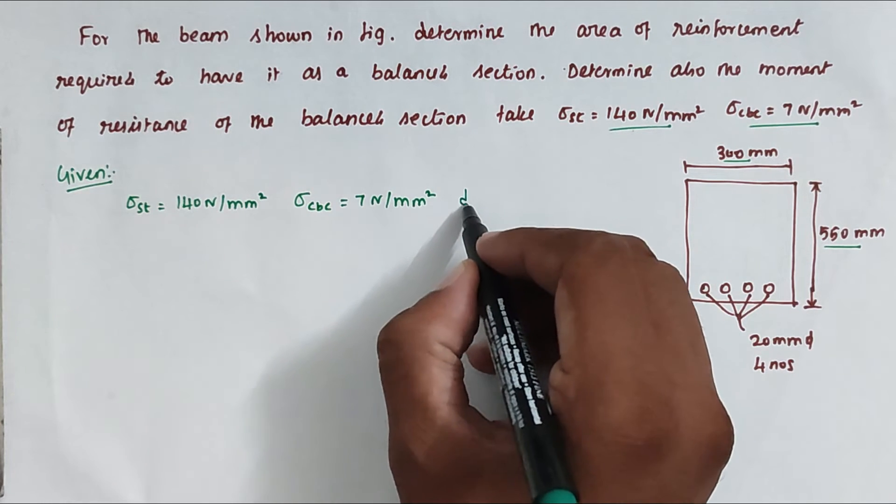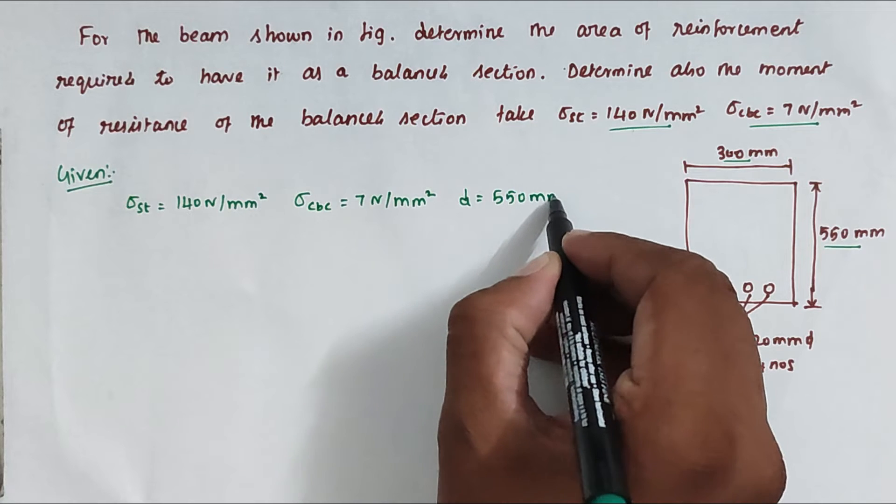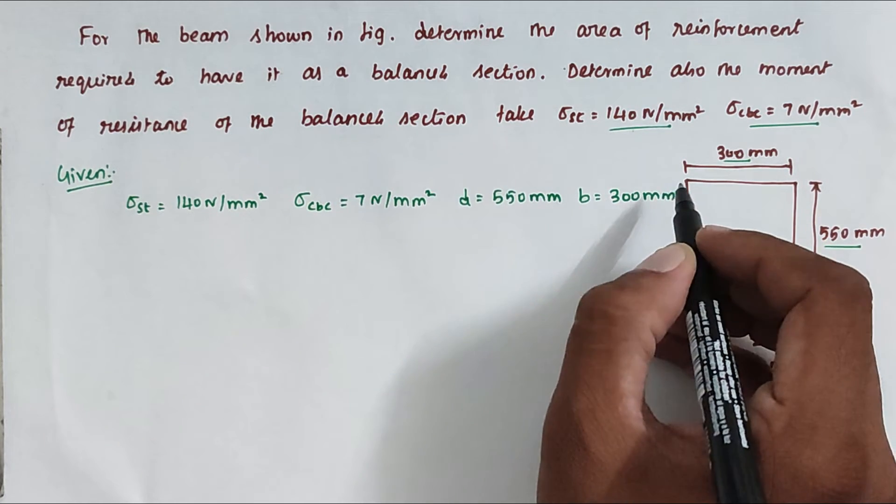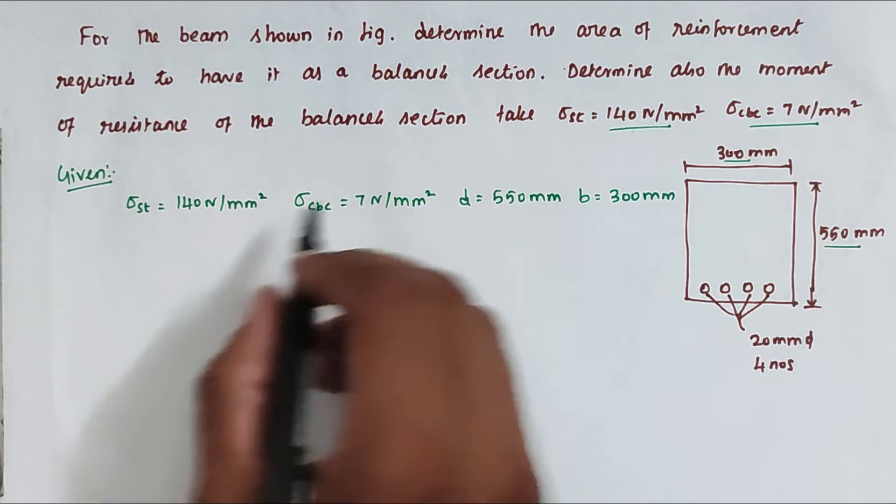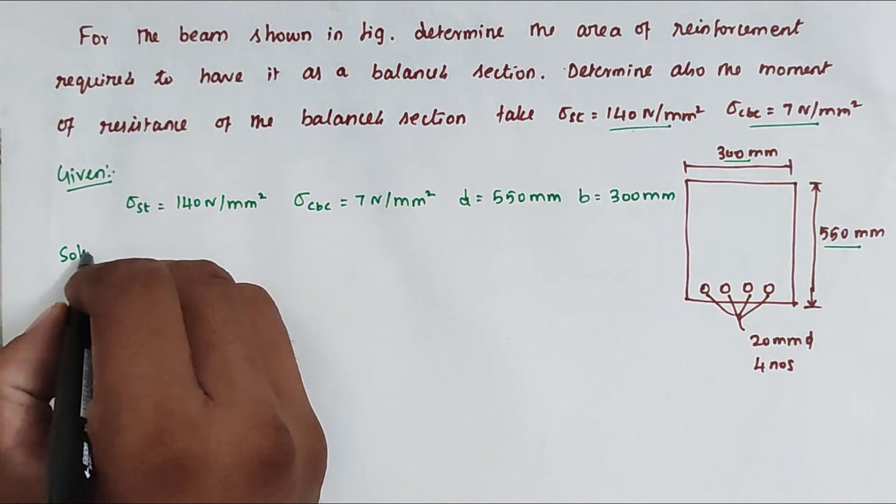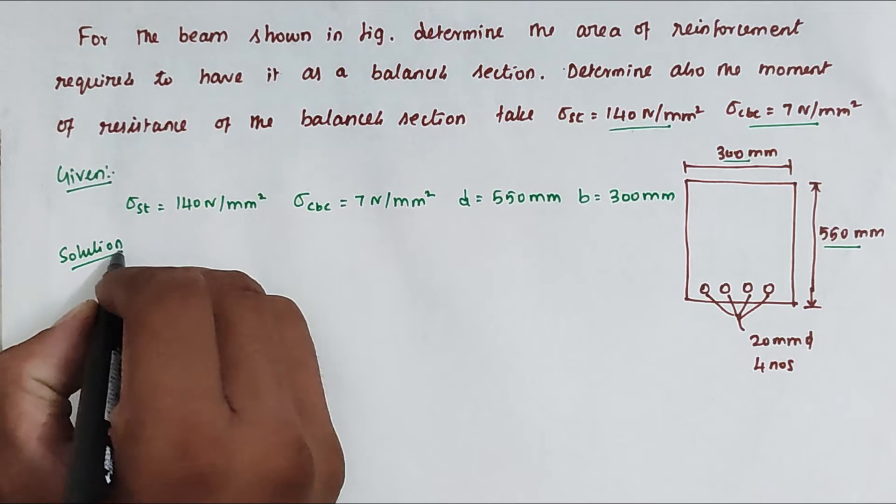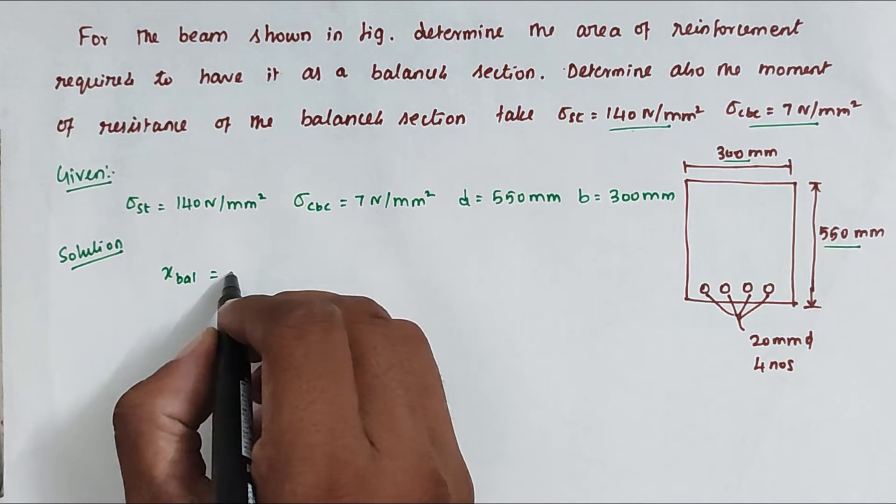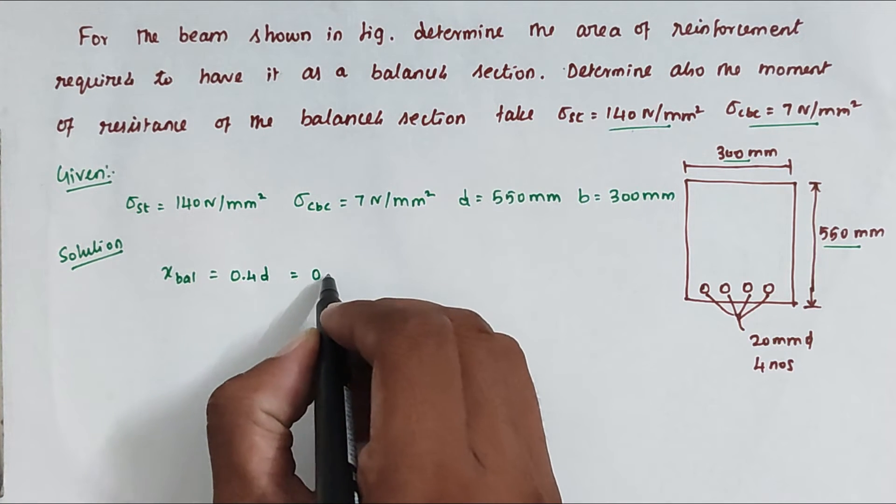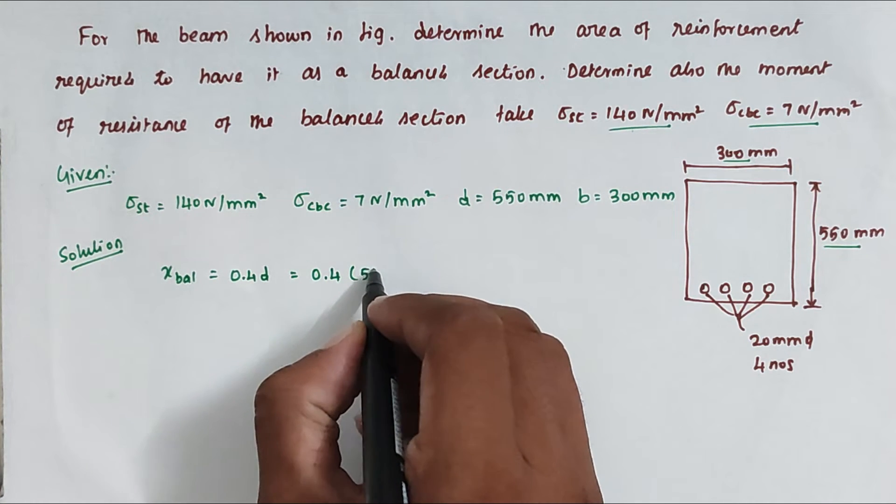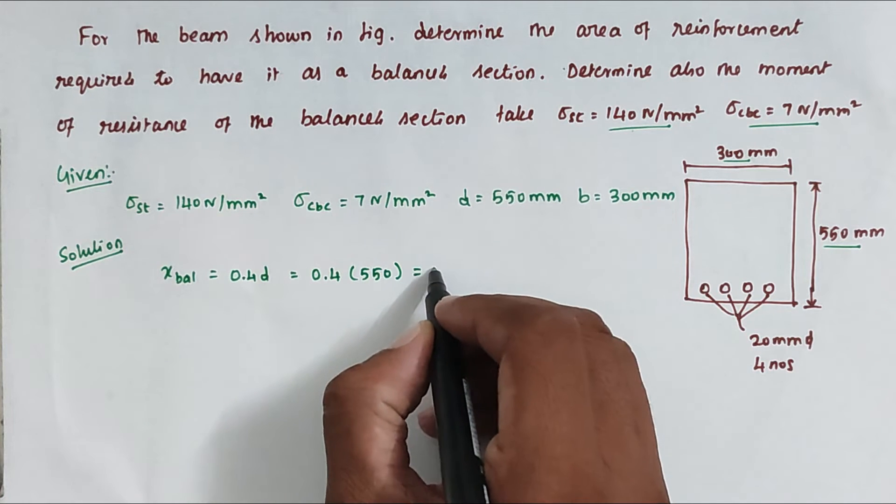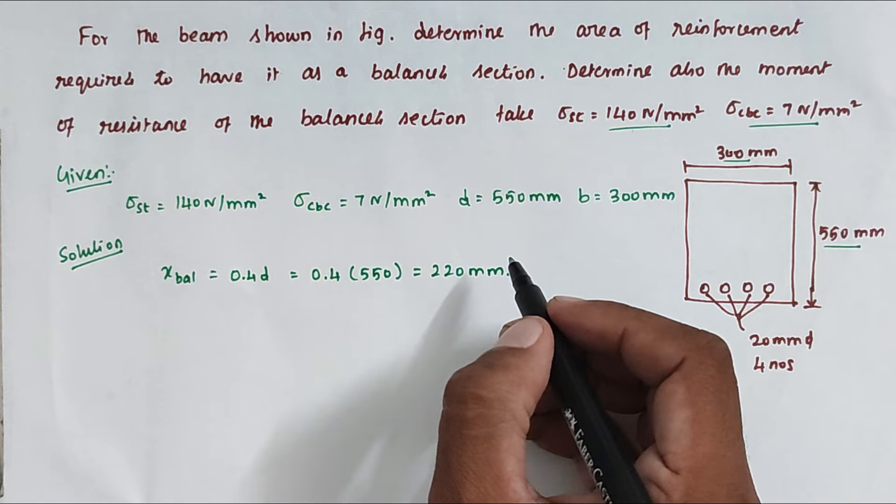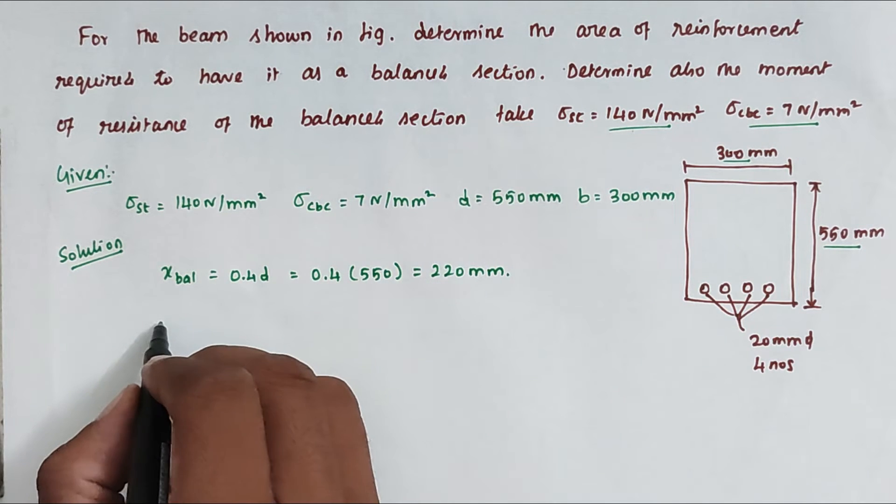So now the solution. Since this is a balanced section, X_bal = 0.4D. We can substitute 0.4 into 550, so the value will be 220 mm. Now we have to find the A_ST value from the relationship.